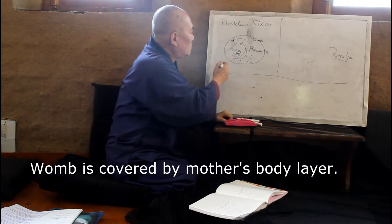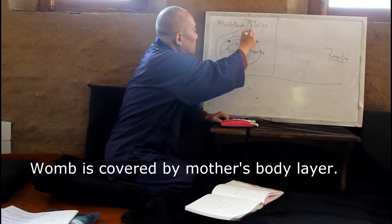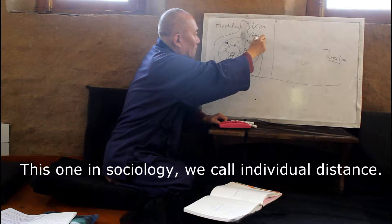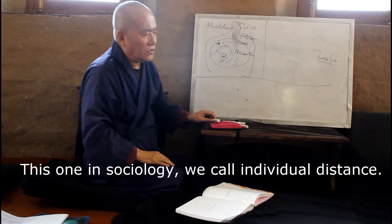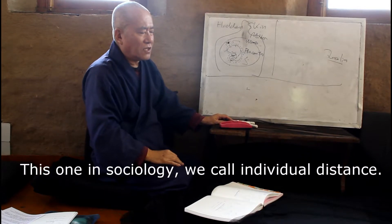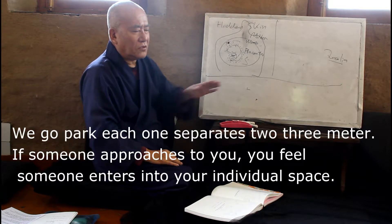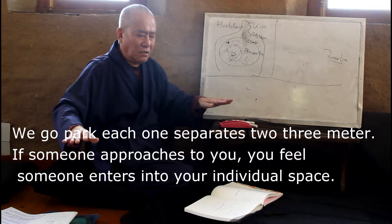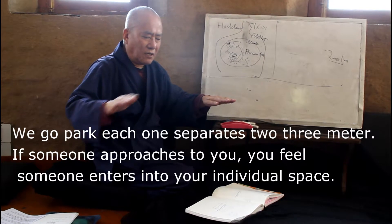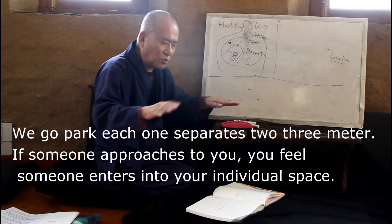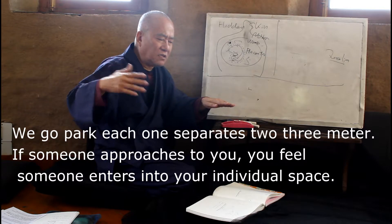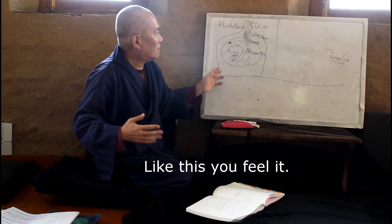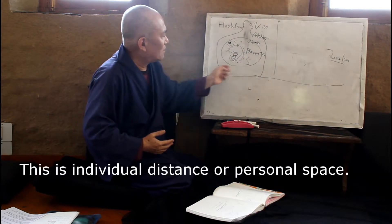And this womb is covered by mother's body. Mother's body layers. This one, in sociology, we call individual distance — maybe two to three meters. When you go to a park, each person separates by three meters. If someone enters into my individual space, like this, you feel it. This is individual distance, personal space.